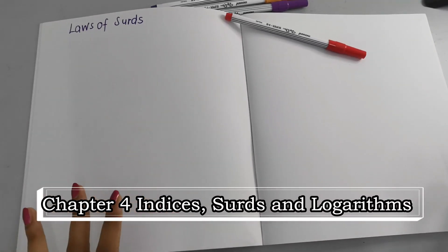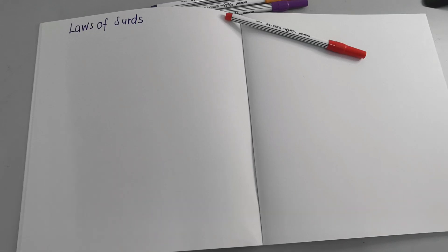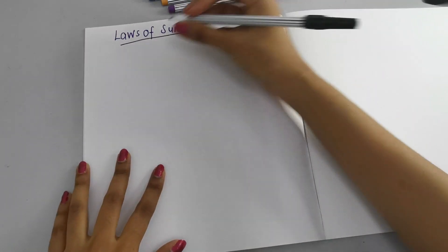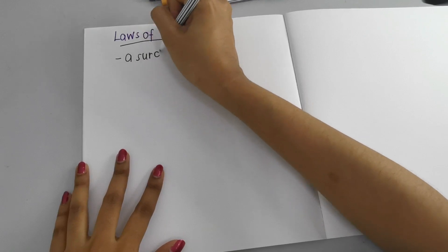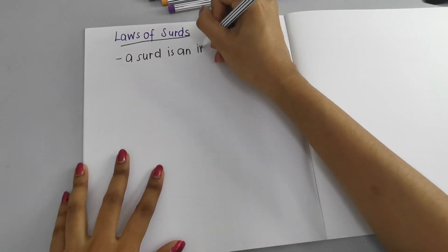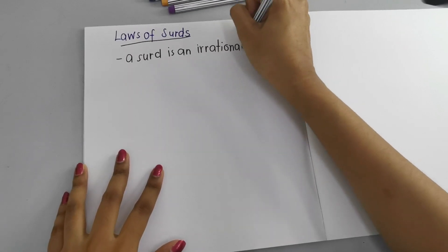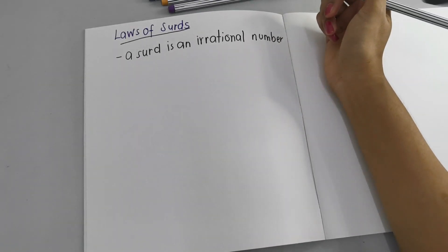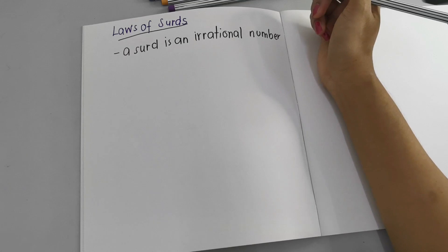Hi everyone, how are y'all doing? Today this is going to guide you on the second part of Chapter 4, which is the Laws of Surds. For the Laws of Surds, first you need to understand what a surd is. A surd is actually an irrational number. If you're still not sure what a rational or irrational number is, you need to go back to Form 1, Form 2, Form 3 — these are basics you definitely need to know.